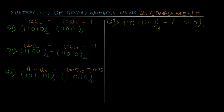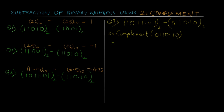In question number 3 we have a smaller value being subtracted from a larger value. As you can see, 11.25 is greater than 6.5, so we are going to get a positive value. First we need to calculate the 2's complement of the second number. To make an equal number of digits, we need to add a 0, so now taking 2's complement of 0110.10.